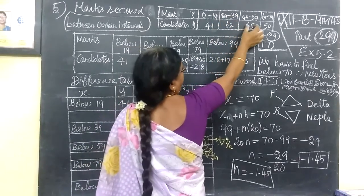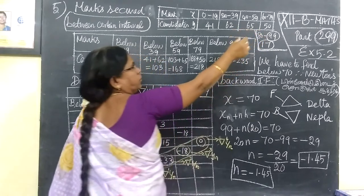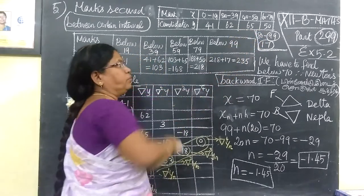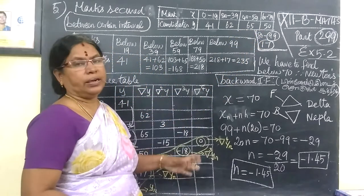Then the next intervals are 40 to 59, then 60 to 79, then 80 to 99. These are the equal class intervals for the frequency distribution table.